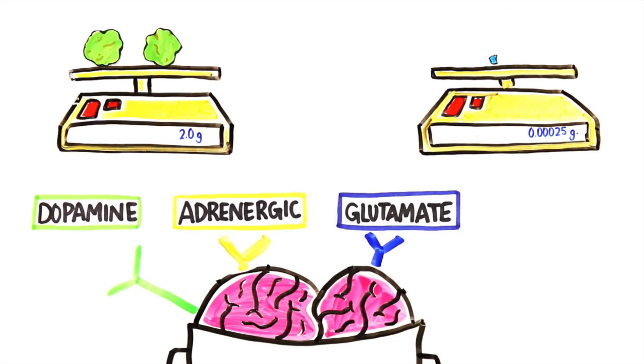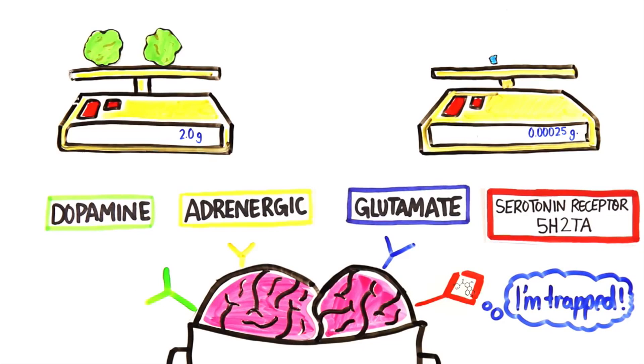Most research focuses on the stimulatory serotonin receptor 5-HT2A. LSD hits the receptor at an unexpected angle, causing it to fold over the LSD, creating a lid. The LSD is then trapped, which makes this receptor continually fire, causing you to hallucinate.